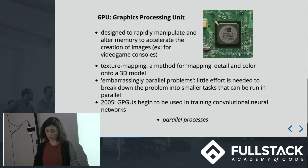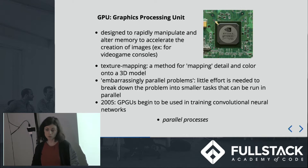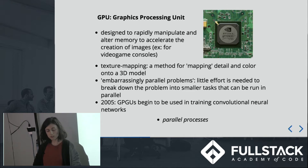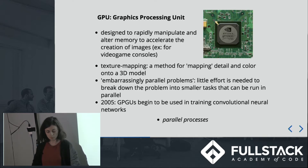The GPU, or graphics processing unit, was a more specialized electronic circuit designed to rapidly manipulate and alter memory to accelerate the creation and display of images. The GeForce 256 was released in 1999 by NVIDIA and marketed as the first GPU. Some of its uses include texture mapping, which is very useful for video games, what are called embarrassingly or alternatively pleasingly parallel problems, and in 2005, GPUs began to be used for training convolutional networks — running more heavy-duty in terms of both space and energy parallel processes.